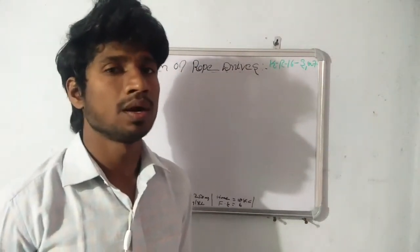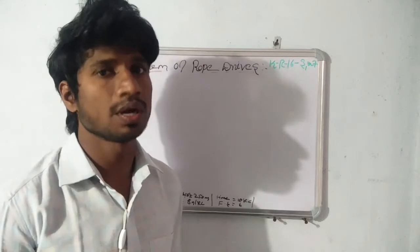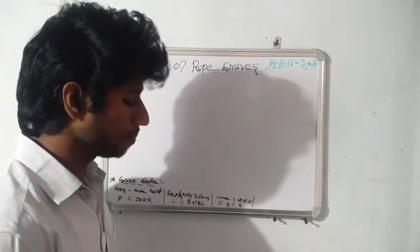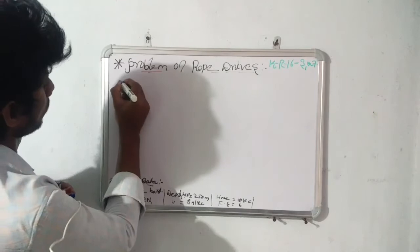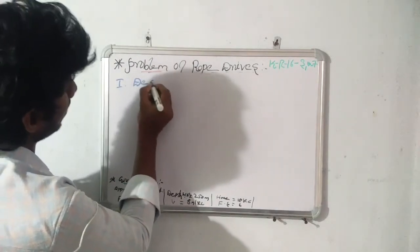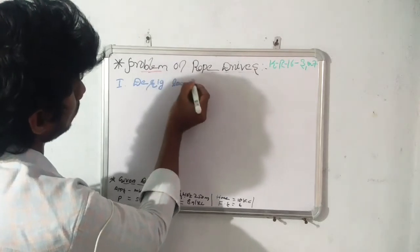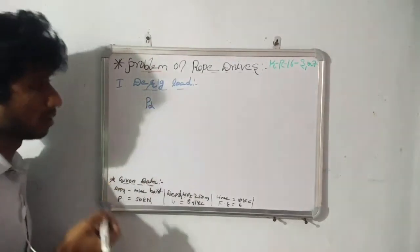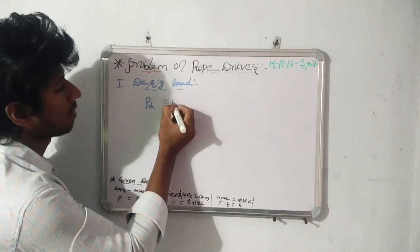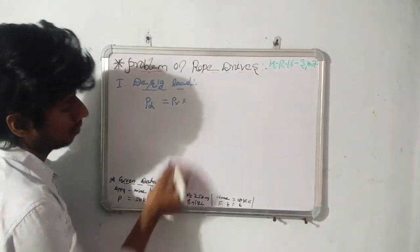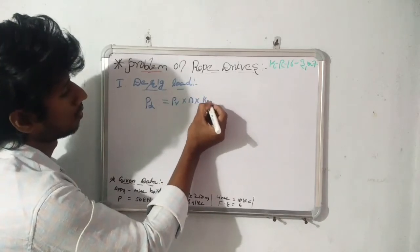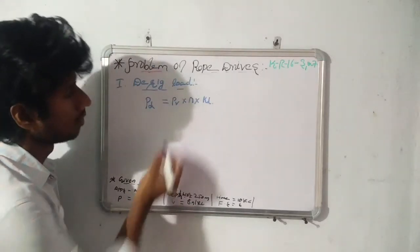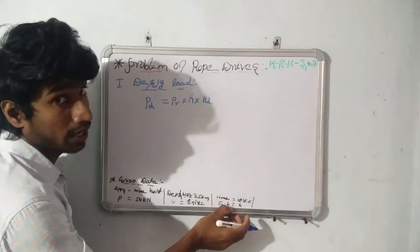Based on the given data, let's see what considerations we are making and how we are going to design a suitable rope drive. In the design of rope drive, the first step is to find out the design load. The design load is defined as PR times N times kD, where PR is the rated or specified load and N is the factor of safety, which is provided in the problem.